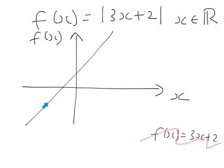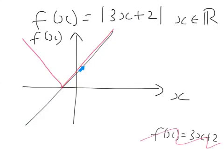If we take x equals minus 10, here we'd get minus 28 — but because we're taking the positive numerical value, we get plus 28. So the graph of y equals mod(3x plus 2) for positive values is the same as without the mod, but for negative values it's a reflection in the x-axis. The positive values stay the same; the negative values get reflected.